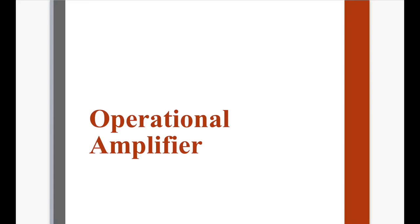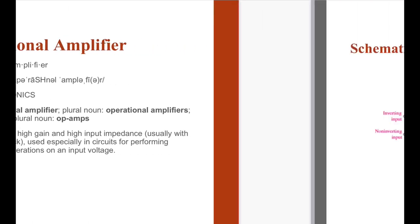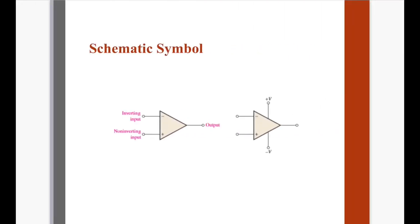Our topic for this session is operational amplifier. Before we go to the properties and computations on operational amplifier, first let us define what an operational amplifier is. From the dictionary, it says that it is an amplifier with high gain and high input impedance, usually with external feedback, used especially in circuits for performing mathematical operations on an input voltage. Kaya tinawag siyang operational amplifier because it is used for mathematical operations primarily nung ginawa siya.